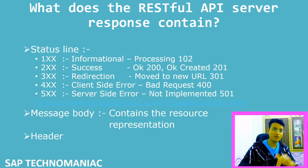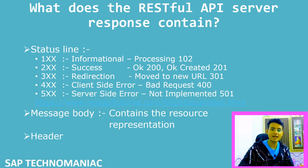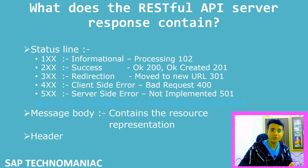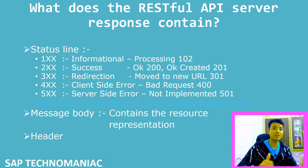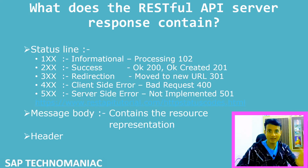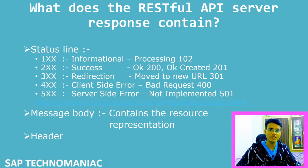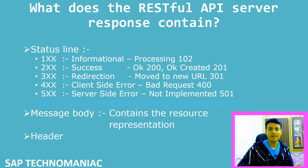As part of the response from the server, one thing we get is a response code. There are already defined response codes on the internet. If a response code starts with 1 — like 100, 101, or 102 — that means it is giving some information. For example, 102 means it is processing. If we got the data successfully, the response will be 200 OK — meaning we got the data successfully. If you want to create a resource in your server, once you send your data, as part of the response you will get 201 — meaning the data you sent has been created. We will see all these responses when we create real-time OData services in our SAP system.